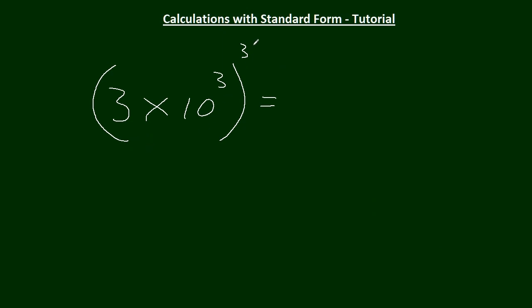What would happen here is the rules of indices apply there and there. So that becomes 3 cubed. And because we're using the rules of indices on this bit, we've got a power already. That's going to be 3 times 3. 3 cubed, 3 times 3 is 9, 3 times 9 is 27, times 10 to the 9.